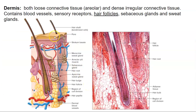The dermis is made of both loose connective tissue — areolar connective tissue — especially within the dermal papilla. That's where you find the loose connective tissue. Deeper in the dermis, that's where you find the dense irregular connective tissue. The dermis is also where you find blood vessels, sensory receptors, hair follicles, sebaceous glands, sweat glands, and more.